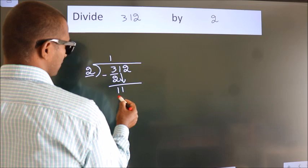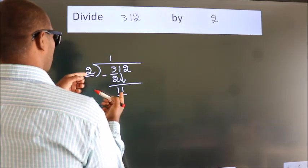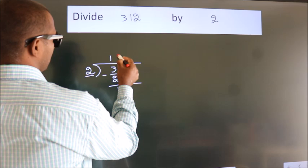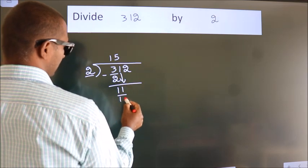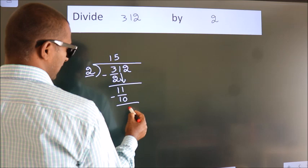So, 1 down. So, 11. A number close to 11 in the 2 table is 2 times 5 is 10. Now we subtract. We get 1.